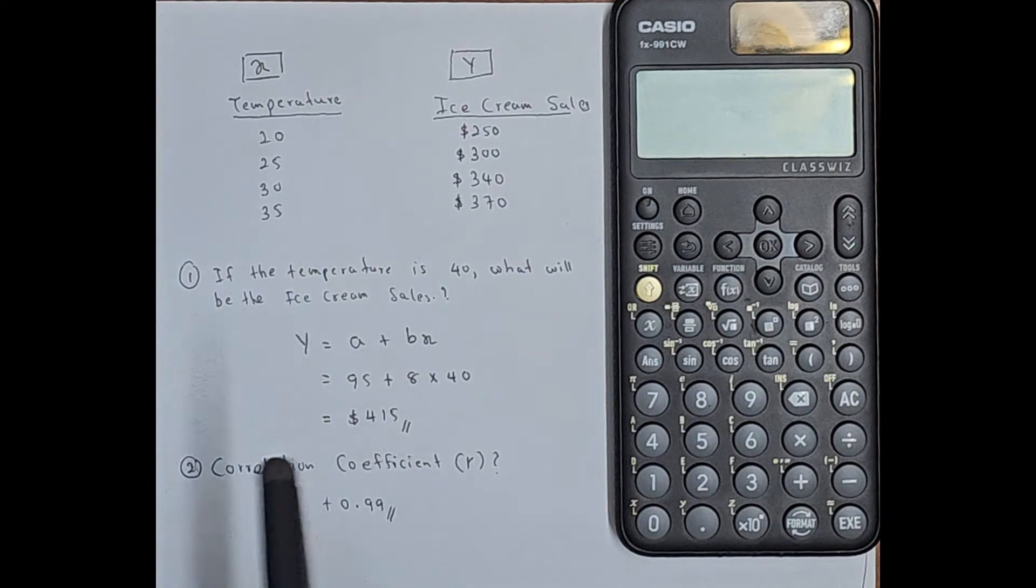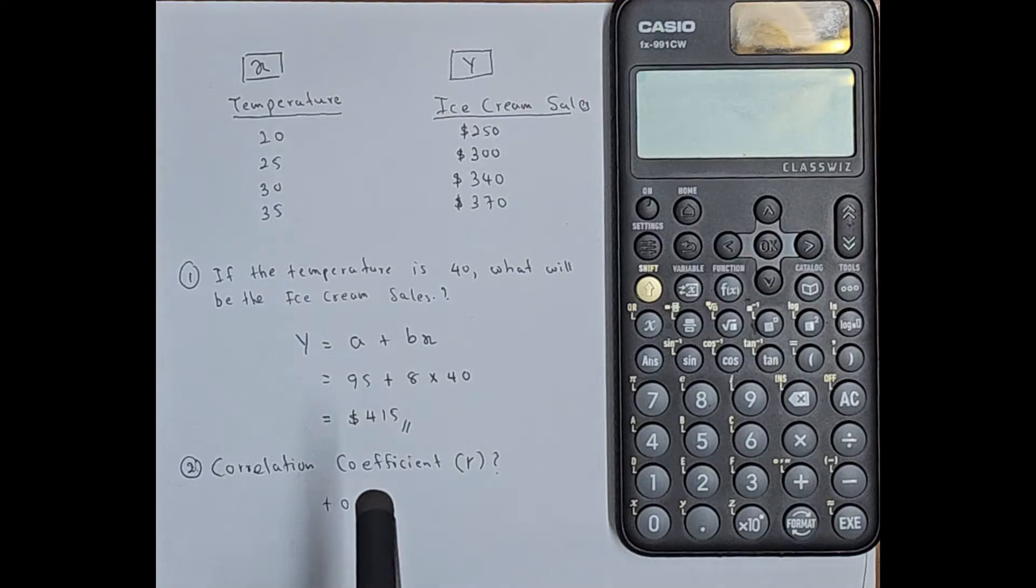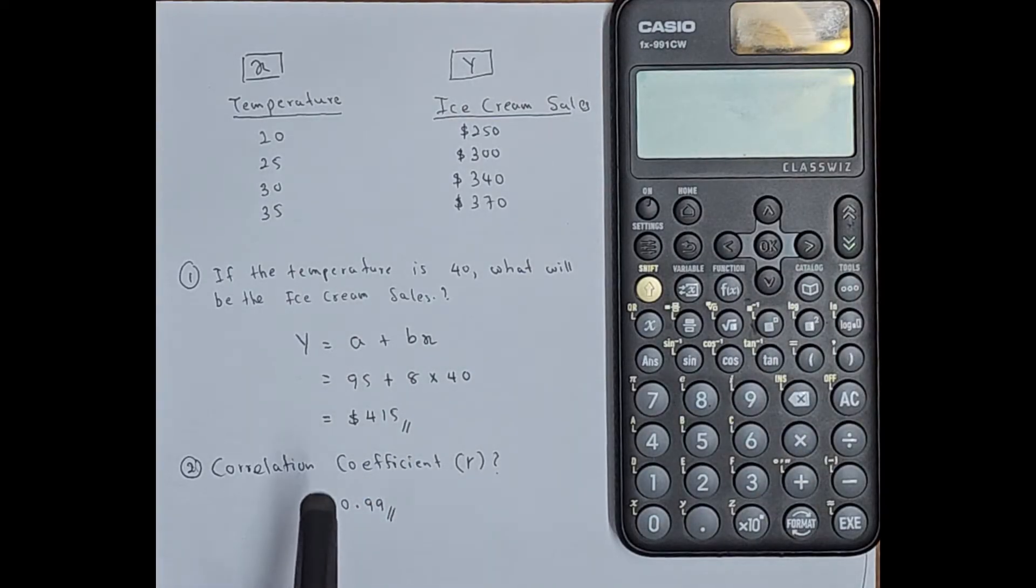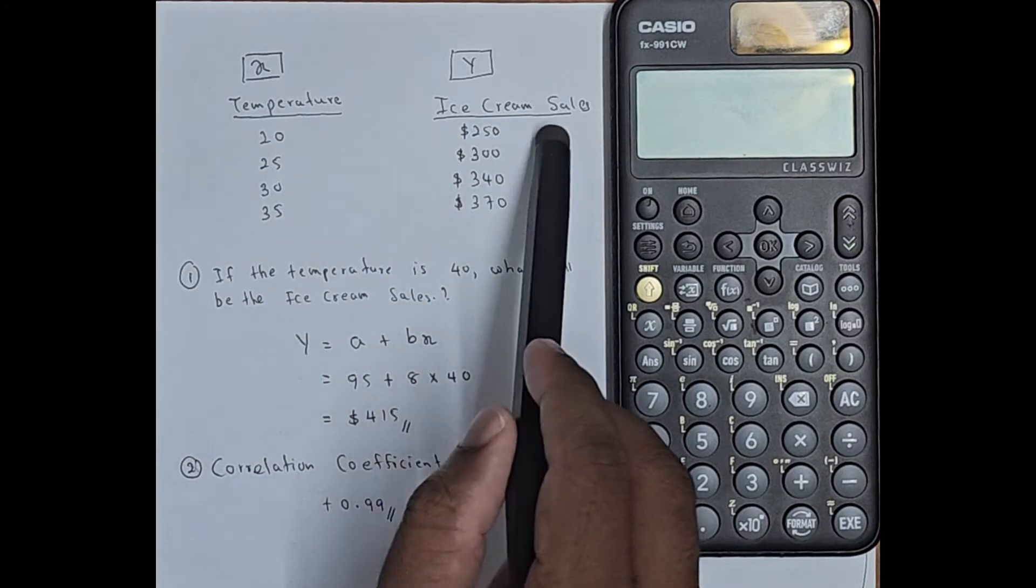Now let's see how to do a linear regression calculation using the Casio FX991CW ClassWiz calculator. So here I have taken an example: temperature and ice cream sales.